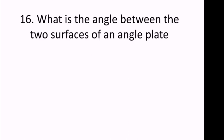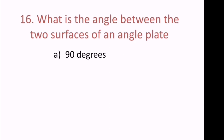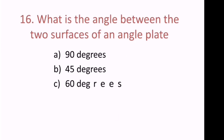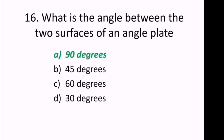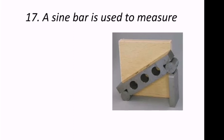Sixteenth question: What is the angle between the two surfaces of an angle plate? The options are 90 degrees, 45 degrees, 60 degrees, or 30 degrees. The answer is 90 degrees — that is the angle between the two surfaces of an angle plate.